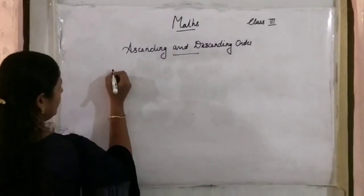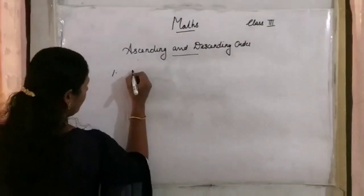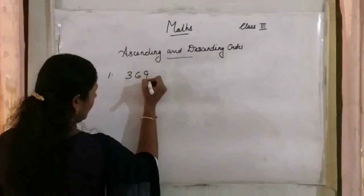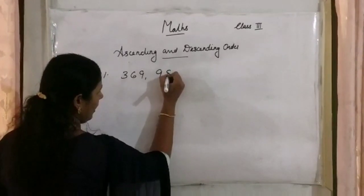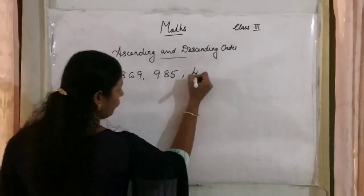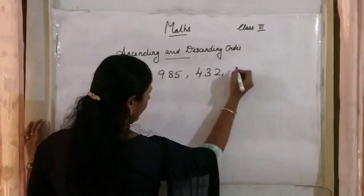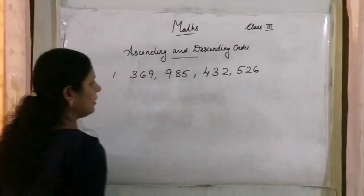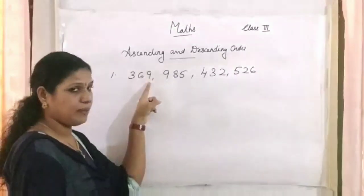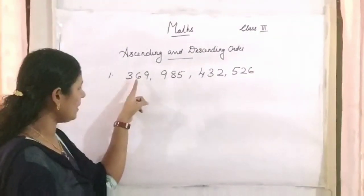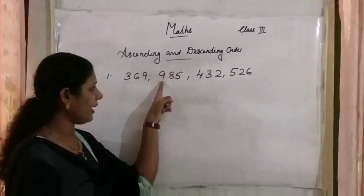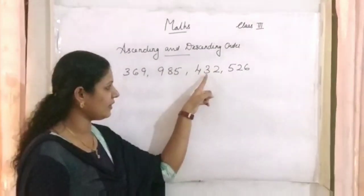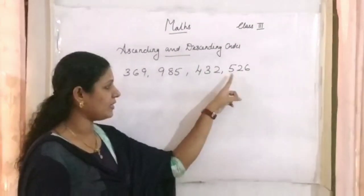Here is an example. The numbers are 369, 985, 432, and 526. We have to write these numbers in ascending and descending order.